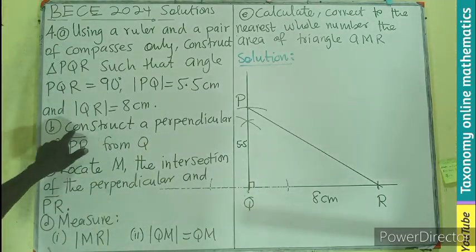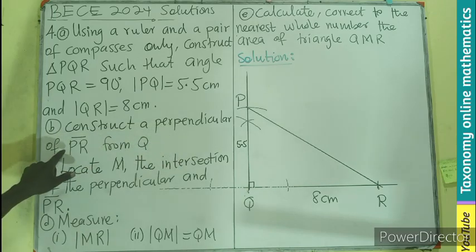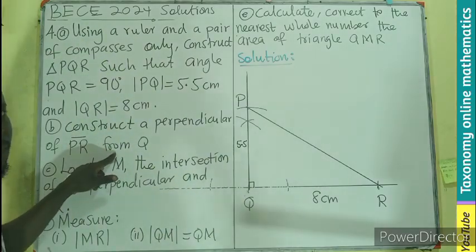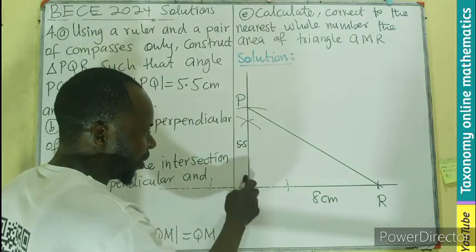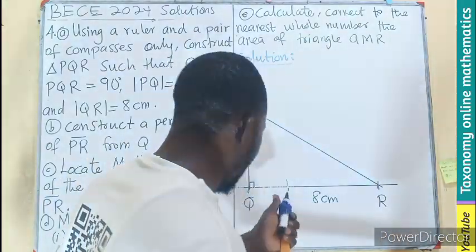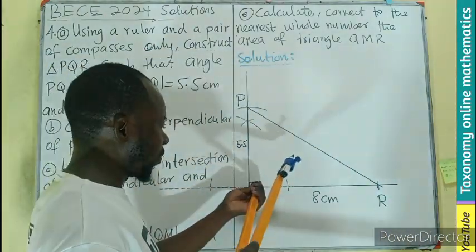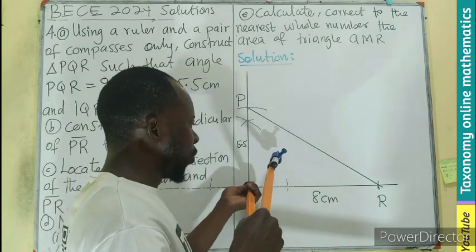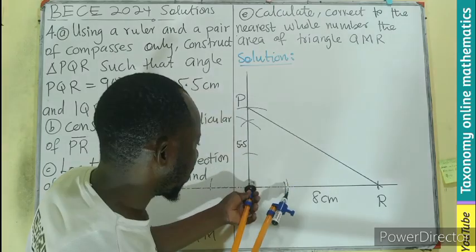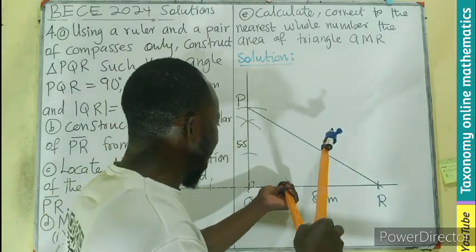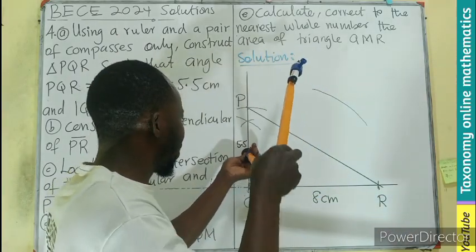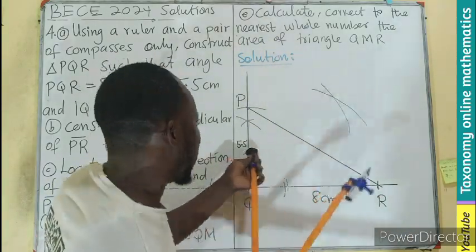What is next? We have to construct a perpendicular of PR from Q, perpendicular from this place. And how do we do that? We can just open any reasonable radius. We stand at the Q, any reasonable radius, make an arc. We arc. We come back to those arcs we did. We make an arc. The second one, we make an arc.